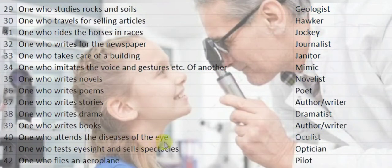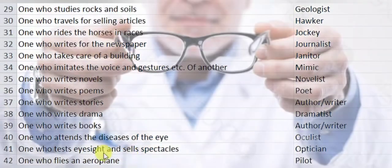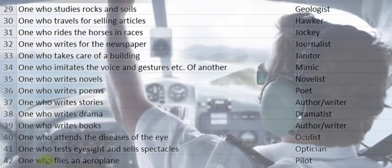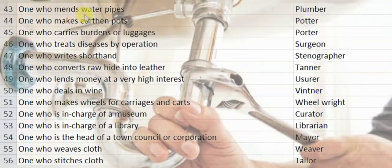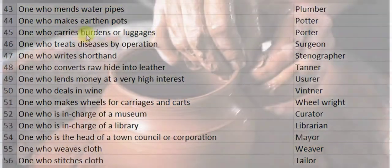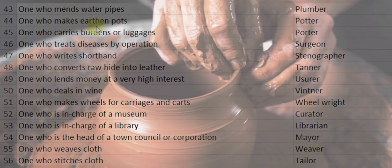One who attends to diseases of the eye is an oculist. One who tests eyesight and sells spectacles is an optician. One who flies an airplane is a pilot. One who makes water pipes is a plumber.